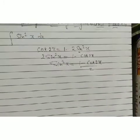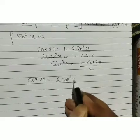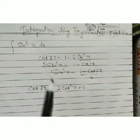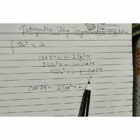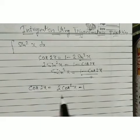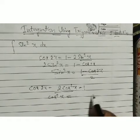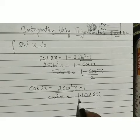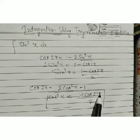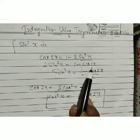We also have the formula cos 2x = 2cos²x − 1. When we have a problem involving sin²x, we substitute it with (1 − cos 2x)/2. If we have a problem involving cos²x, we derive from this formula that cos²x = (1 + cos 2x)/2. So whenever we see cos²x, substitute (1 + cos 2x)/2, and for sin²x, substitute (1 − cos 2x)/2.